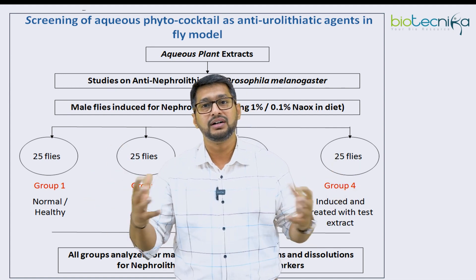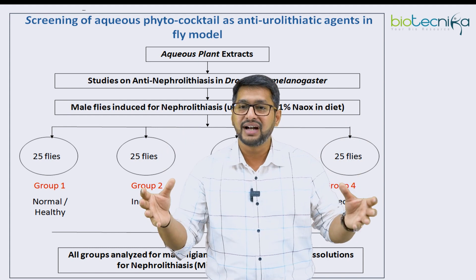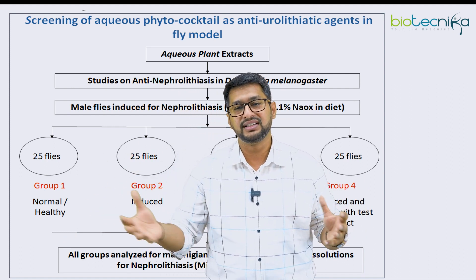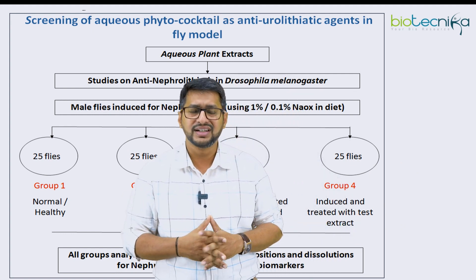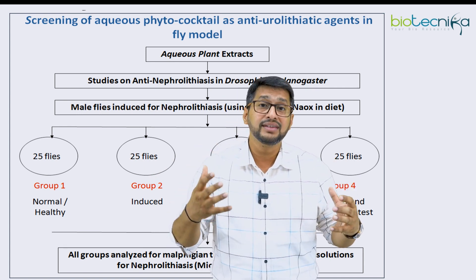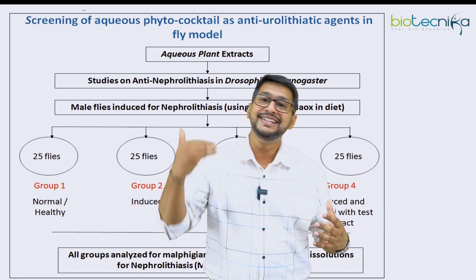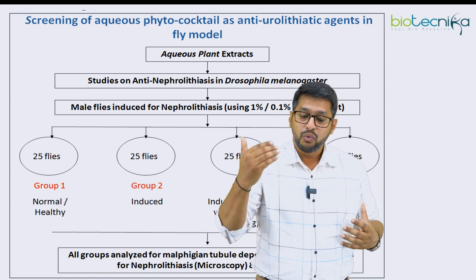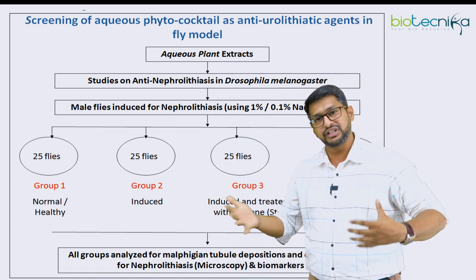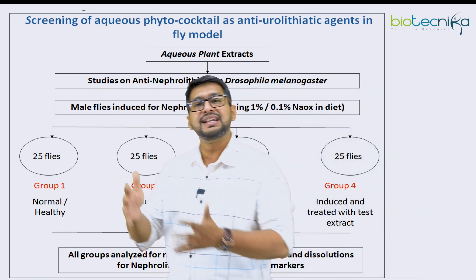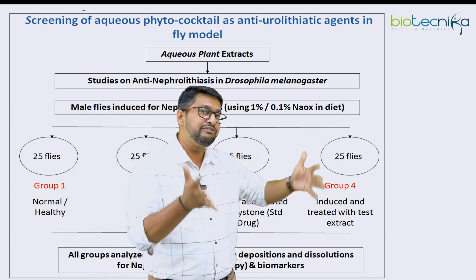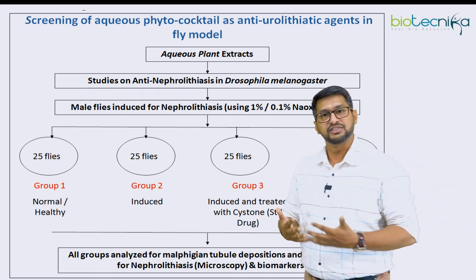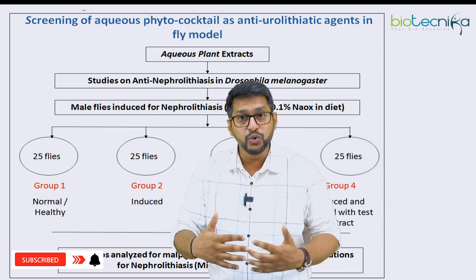How do you actually design your study? If you are taking a fly as a model, you can take up plant extracts and design an anti-urolithiatic model. You can take up Drosophila Oregon K — called DMOK from the University of Oregon. Since the prevalence is more in males, you can consider male flies and induce them with either calcium oxalate or sodium oxalate through diet. Normally in this study, 1% sodium oxalate has been used. You then segregate the male flies in groups of 25 or 50 as group 1, group 2, group 3, and group 4.